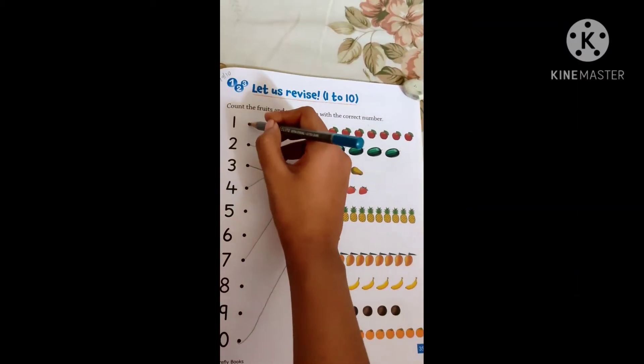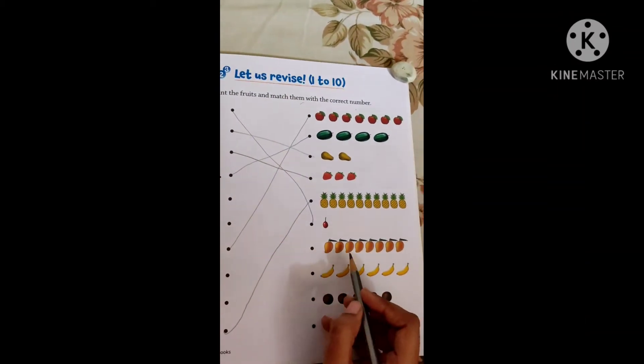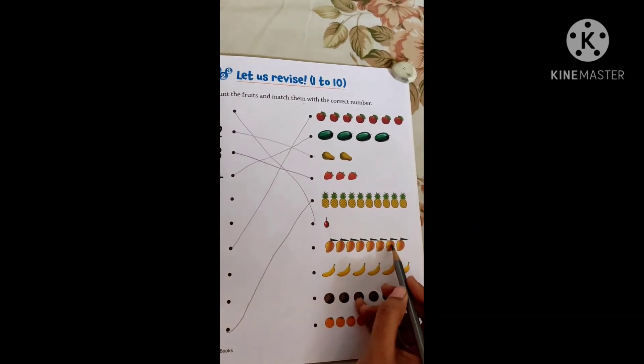1 cherry. Mangoes. 1, 2, 3, 4, 5, 6, 7, 8.